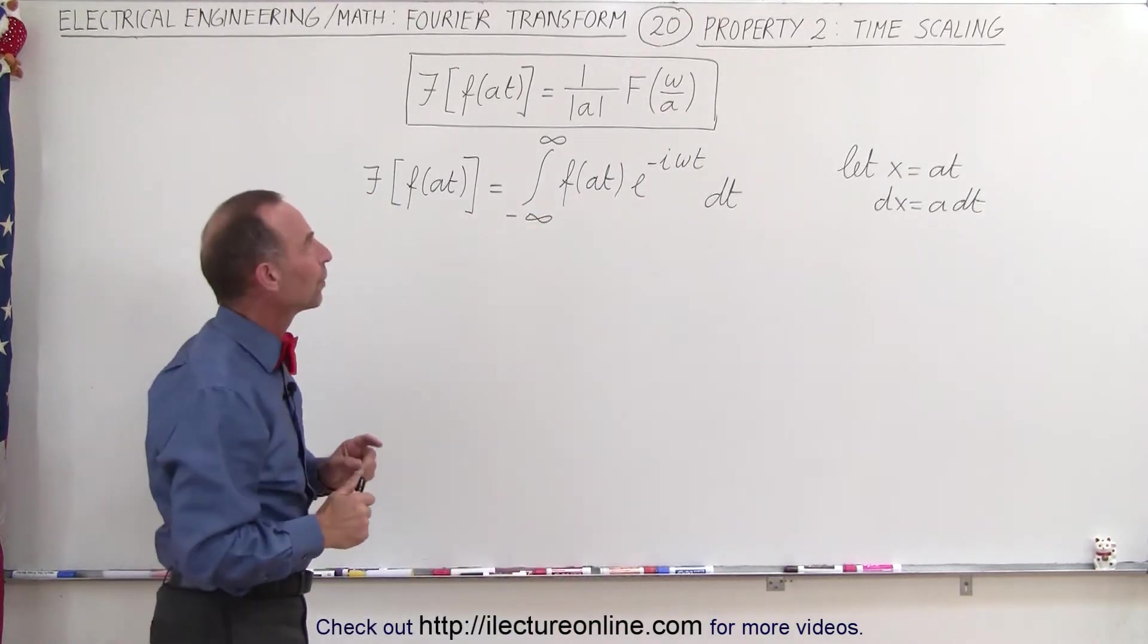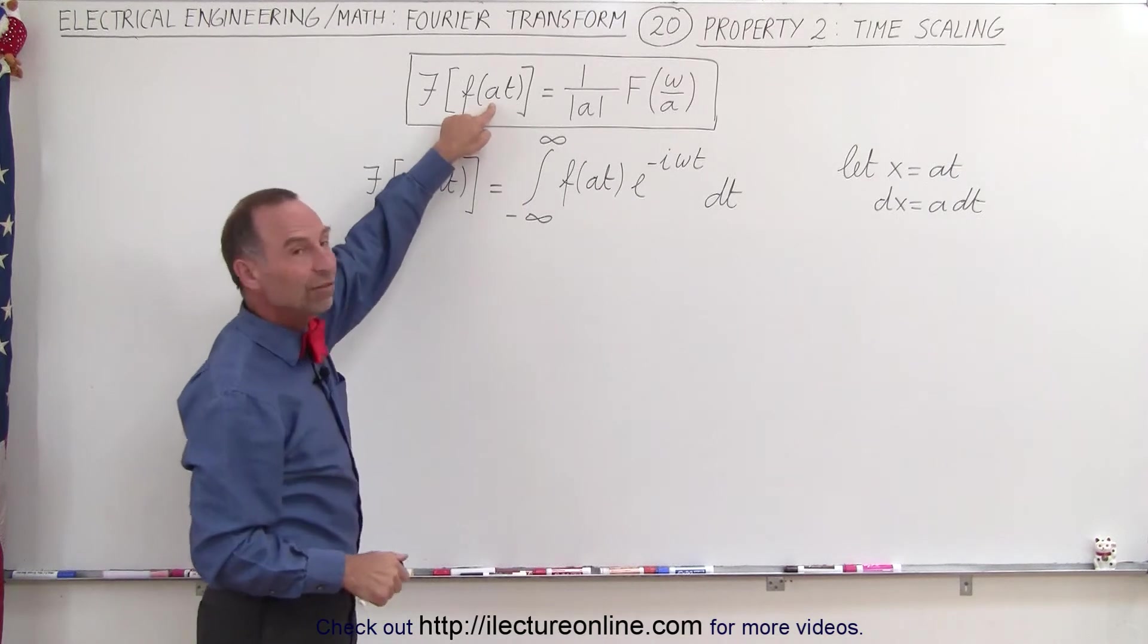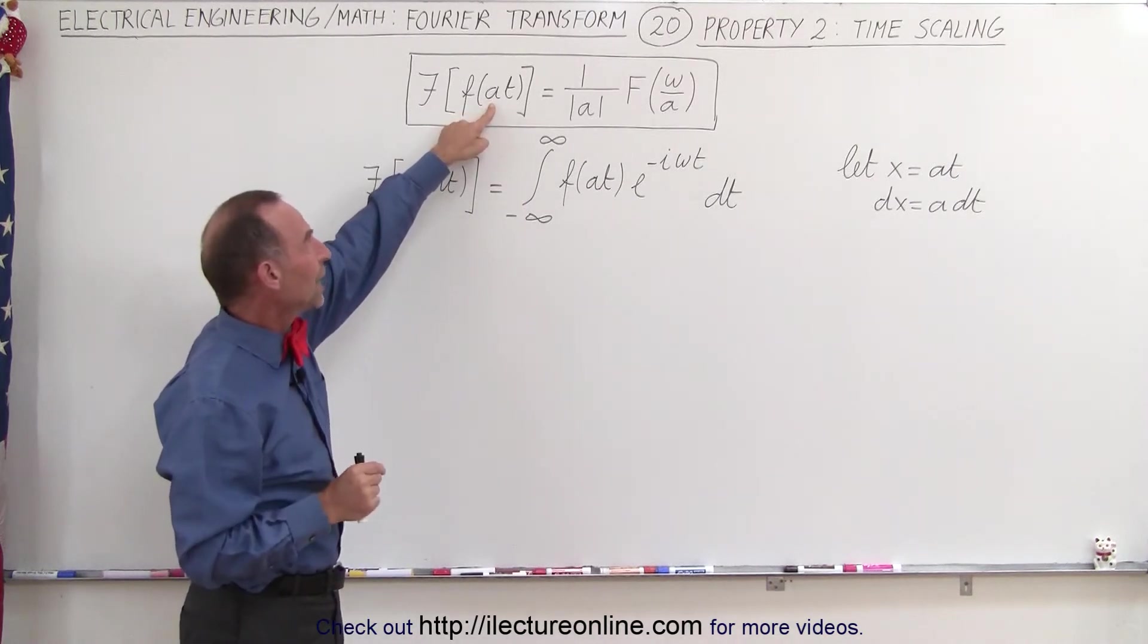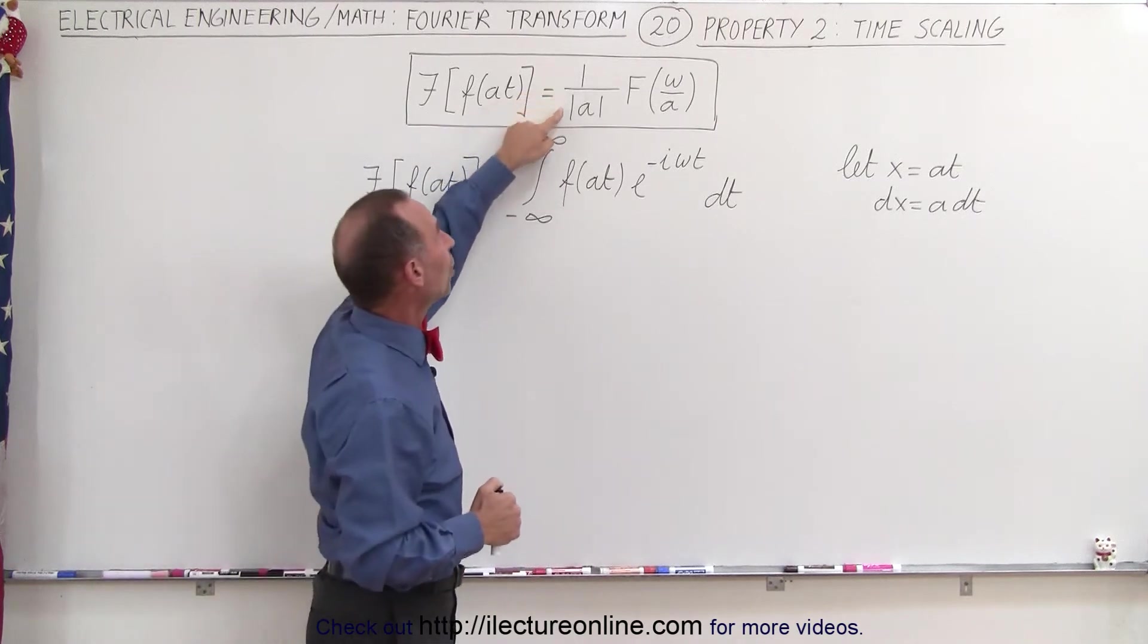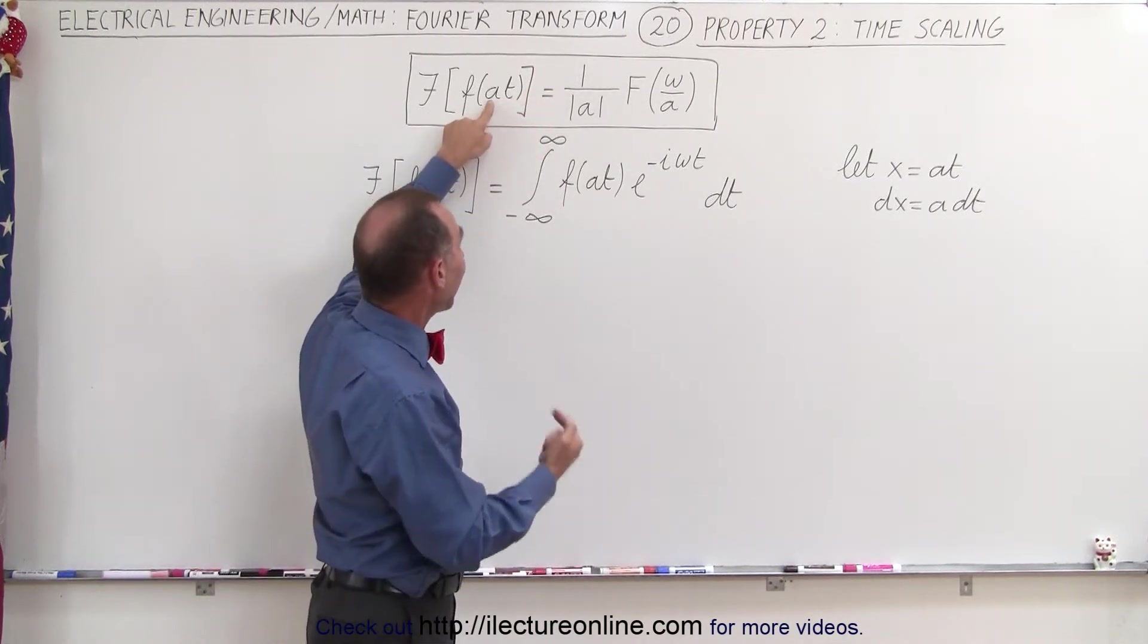Now that's interesting. First of all, if we increase the frequency in the time domain, the result when we take the Fourier transform is that we'll have a smaller amplitude by that factor. So if this is equal to 10, we'll have one-tenth the amplitude.